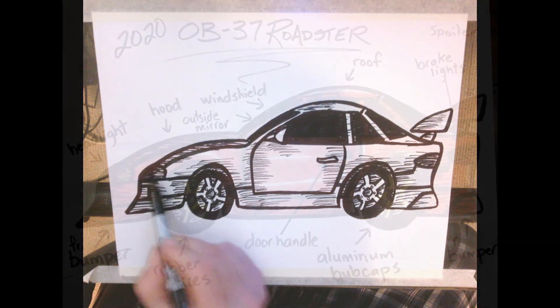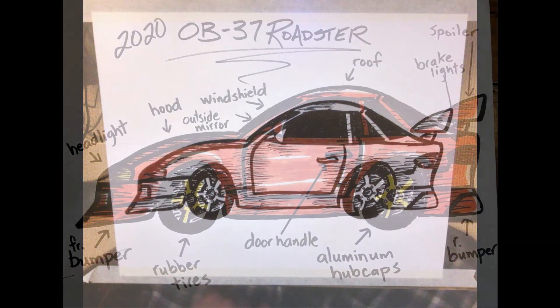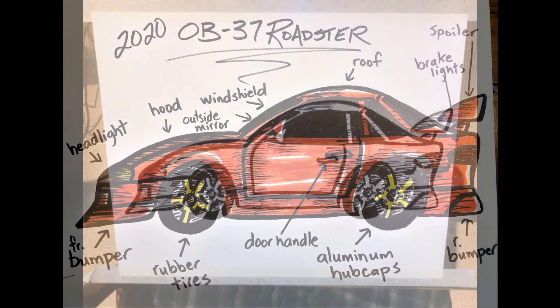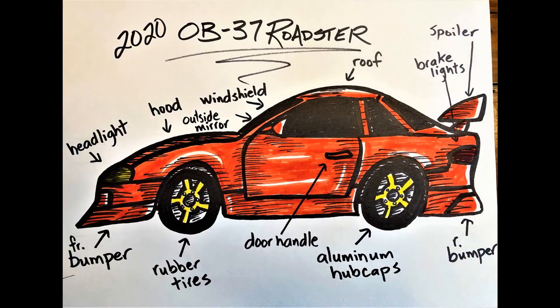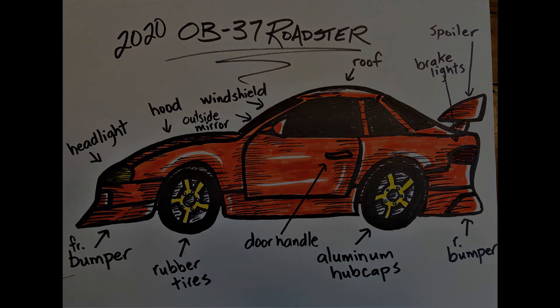Once you're done with hatching, you're going to add some color to your vehicle. It's kind of like a design lesson — you can label different parts to make it look fancy, like headlight, door handle, and spoiler, and then name your vehicle. I hope you had fun in that lesson and I will see you soon — bye guys!